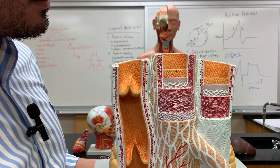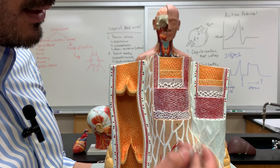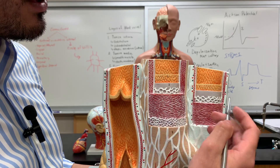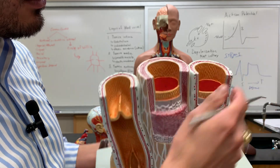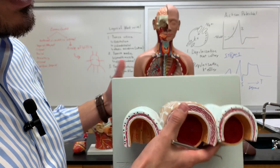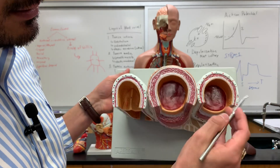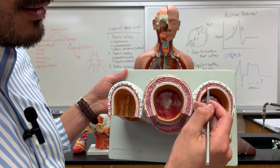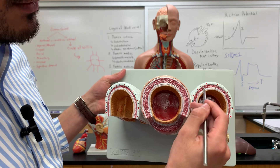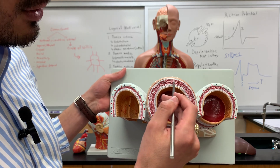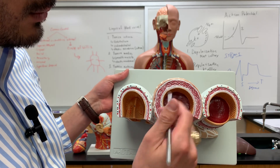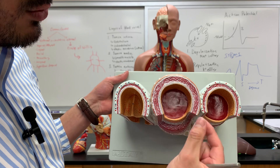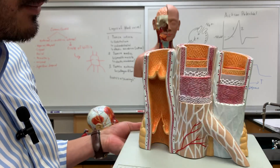If you look at the features comparing the artery with the vein, one thing you'll notice is that the smooth muscle found in the vein is very thin compared to the artery, where the smooth muscle is thicker.